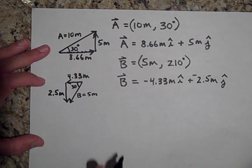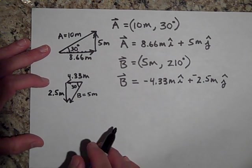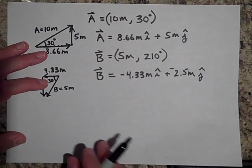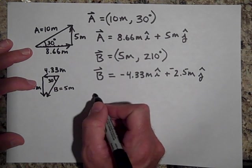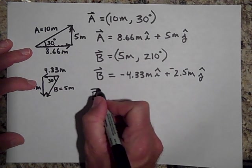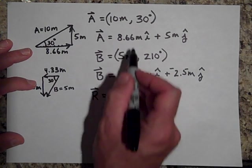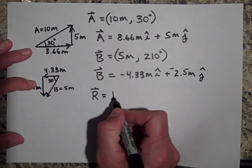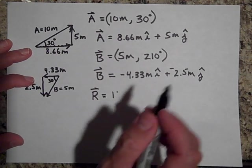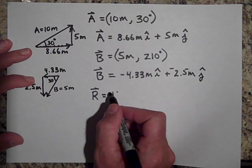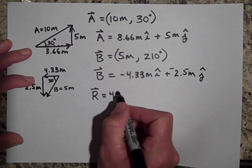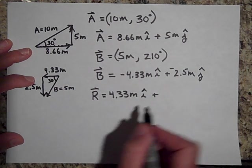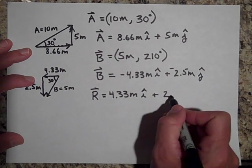What's nice about writing things in terms of unit vectors is that it's really easy to add them. If you want to add vectors A and B, the resultant is just the sum of their i-components and j-components separately. Because one is negative, the i-component comes out to about 4.33 meters in the i-direction, and adding the j-directions gives about 2.5 meters in the j-direction.